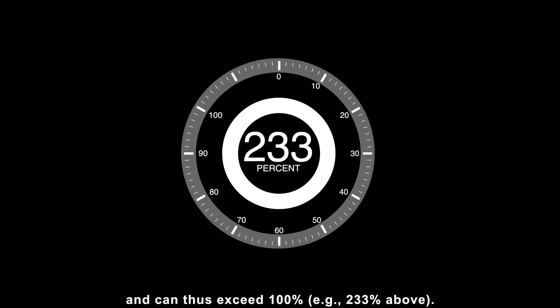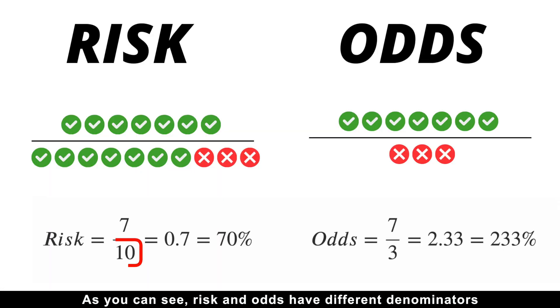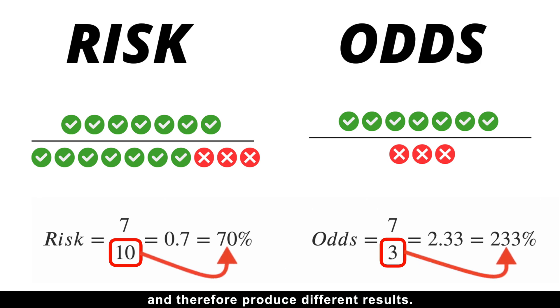Odds, synonymous with chance, range from 0 to infinity and can thus exceed 100%. As you can see, risk and odds have different denominators and therefore produce different results.